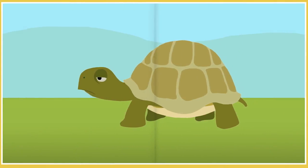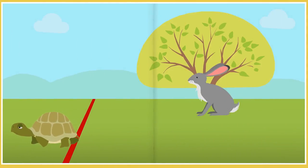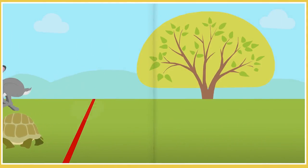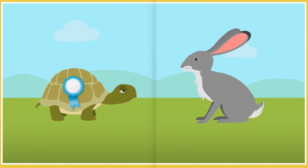The tortoise slowly plodded along. When the hare woke up, he saw the tortoise crossing the finish line ahead of him. So we see that slow and steady wins the race.